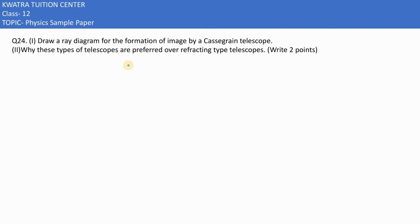Here in this case it says draw a diagram for the formation of image by a Cassegrain telescope. How do you make a Cassegrain telescope?